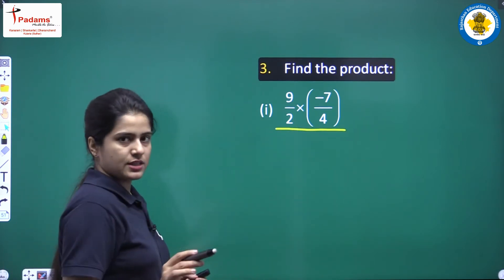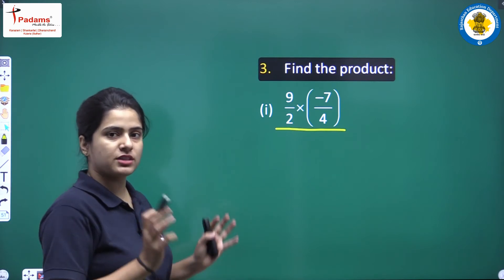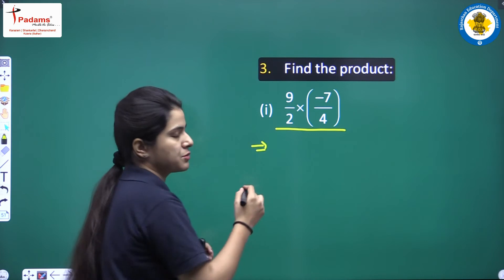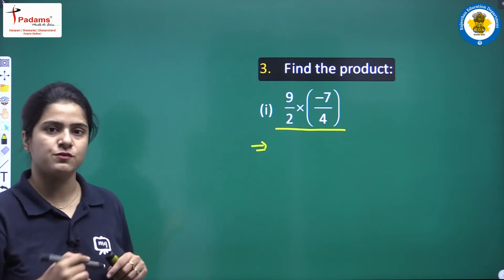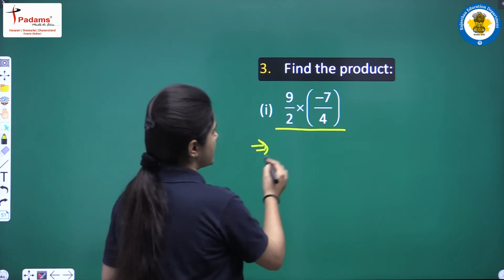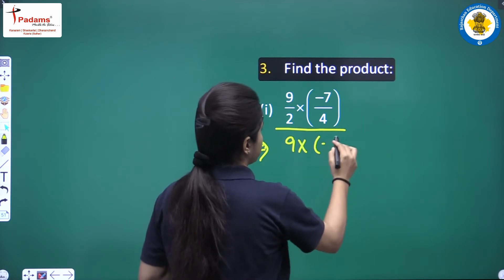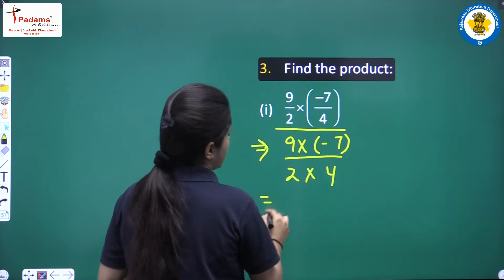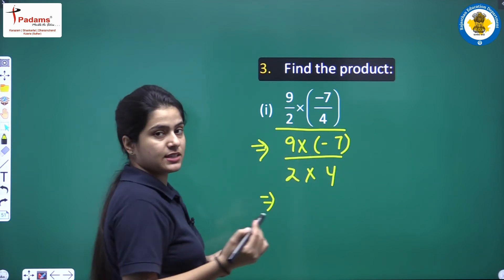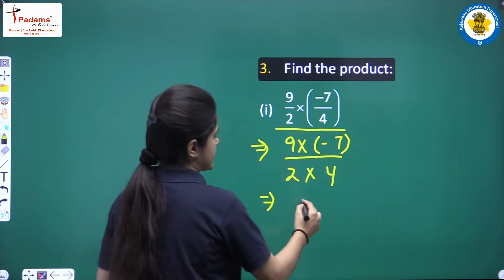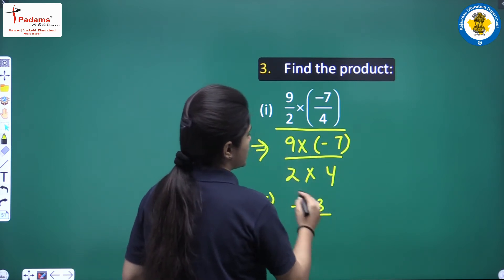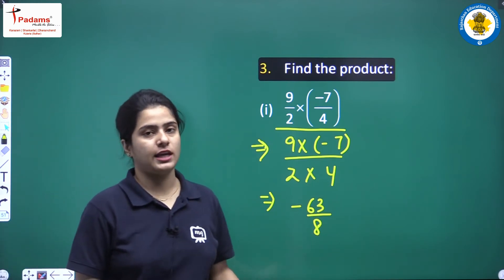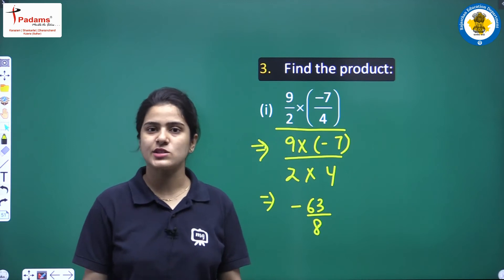This is not an integer, so basically you have rational numbers. You have to multiply by having the product of numerators upon the product of denominators. So, 9 into minus 7 upon 2 into 4. 9 into minus 7 is minus 63, and 2 into 4 is 8. So, minus 63 upon 8 is the answer.